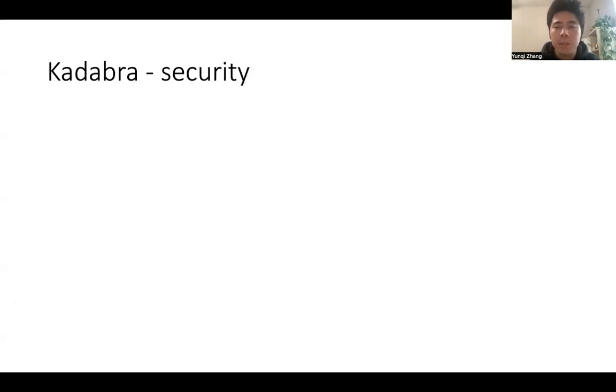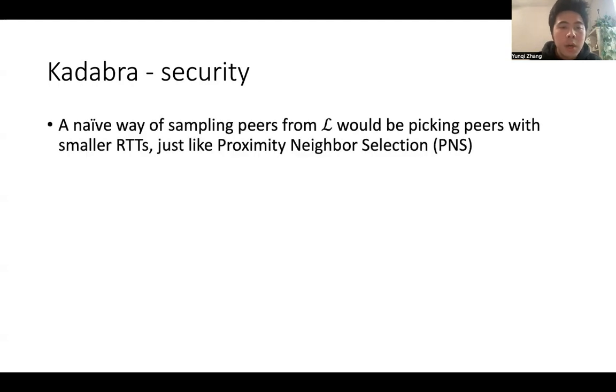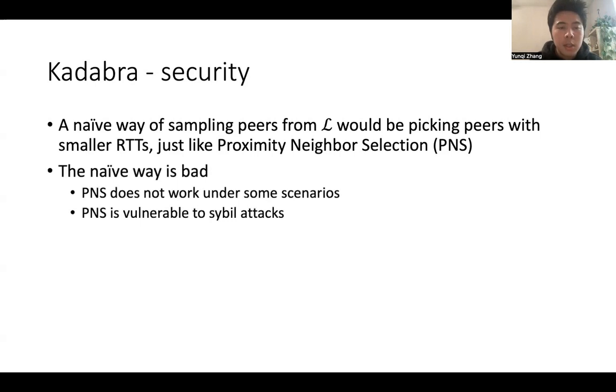Here we discuss the security perspective of Cadabra. A naive way of sampling peers from the candidate list would be picking peers with smaller RTT. RTT is round trip time. Just like proximity neighbor selection. The naive way is bad, because proximity neighbor selection doesn't always perform good. And PNS is vulnerable to sybil attacks.